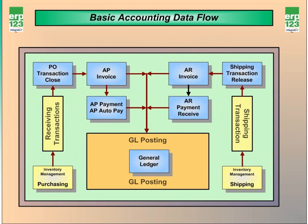Let's take a look at the basic accounting flow within ERP123, starting with the accounts payable side. From purchasing purchase orders, you will receive product and create receiving transactions. A module called PO transaction close allows you to see all of the receiving transactions that you've created. Any open transactions in the PO transaction close module are being accrued prior to AP invoice. The AP invoice module is used to process all of the PO receiving transactions, and here you can also create manual invoices as necessary. The AP invoice module creates transactions that go to your general ledger.